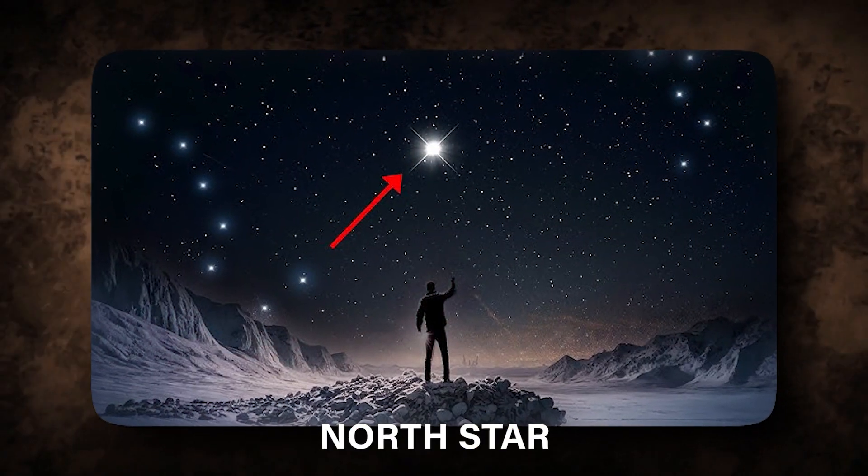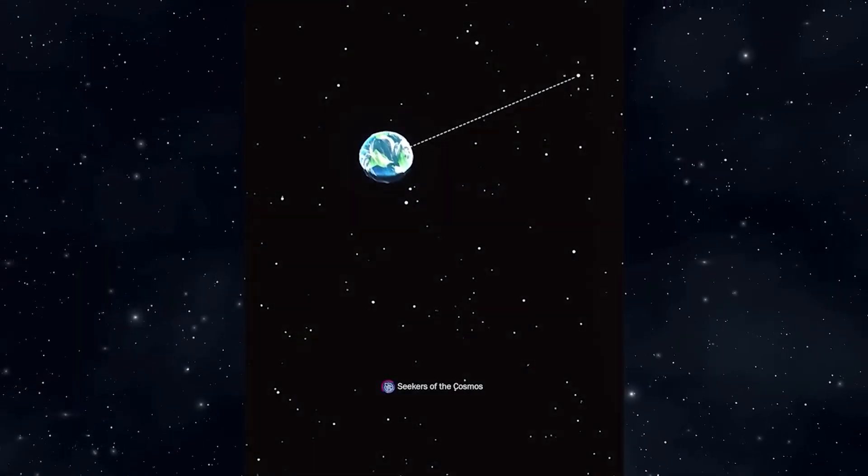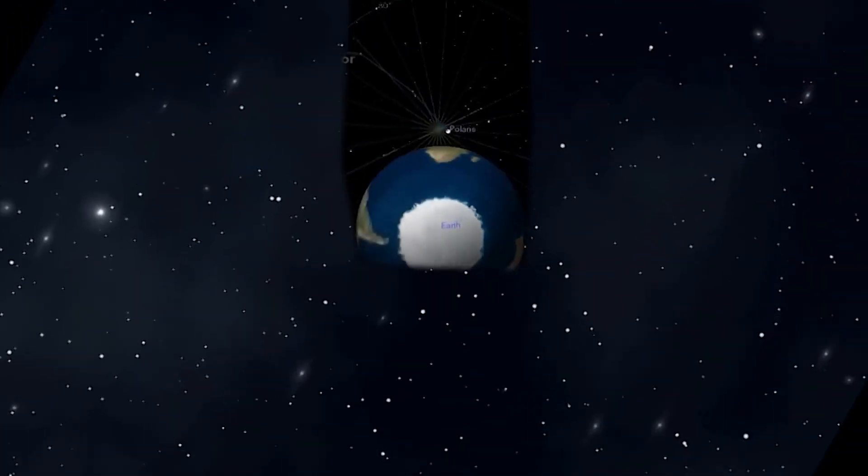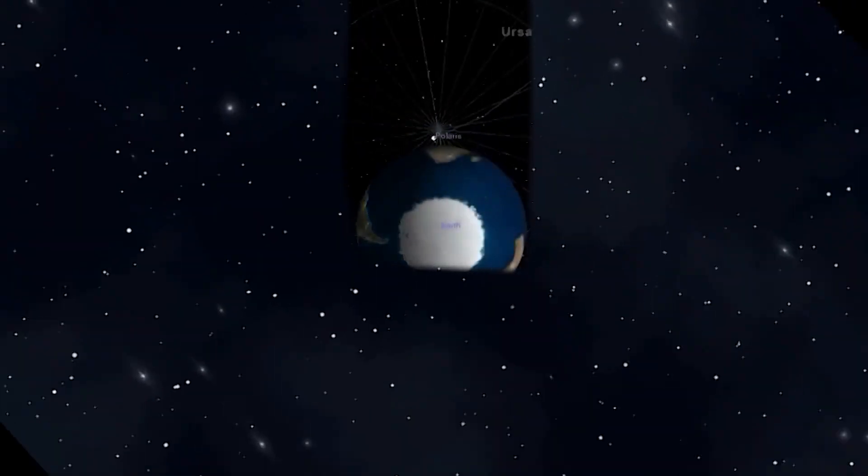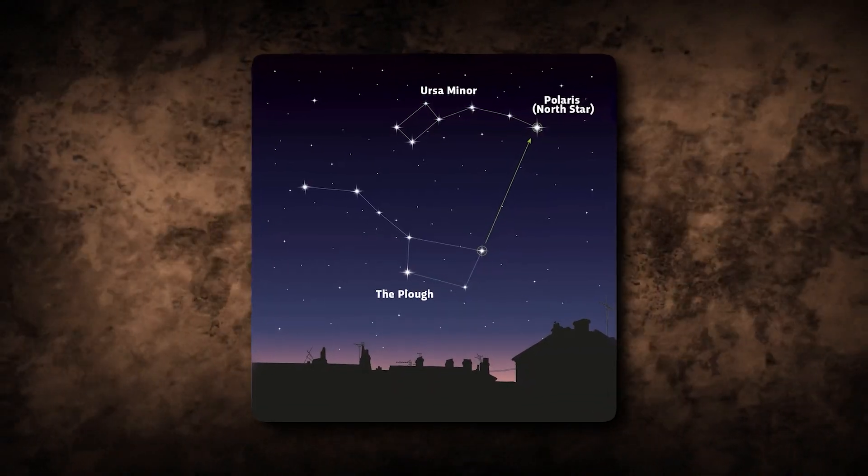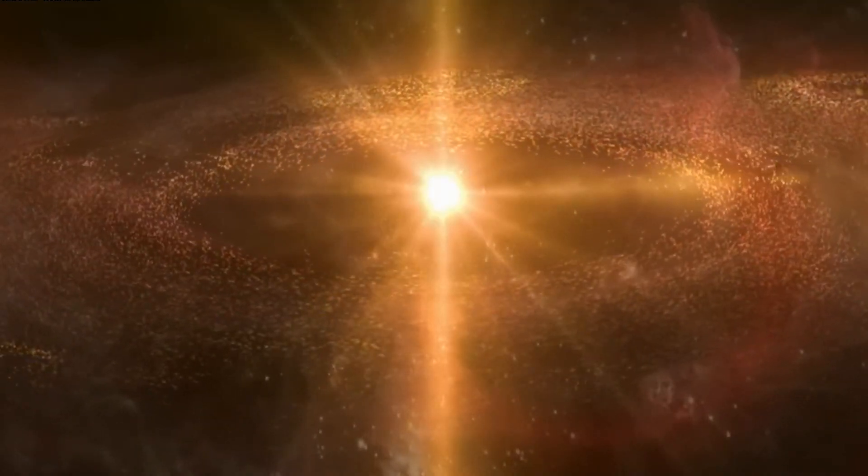Also known as the North Star, positioned almost directly above Earth's north pole, Polaris appears as a fixed point in the northern sky. It is part of a complex triple star system, with the primary component being a yellow supergiant, Polaris AA.